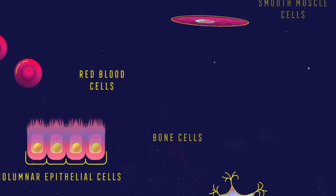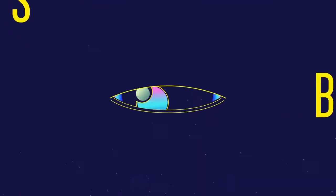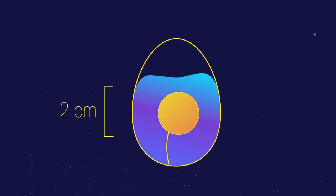Now cells come in all different shapes and sizes. Occasionally, cells can be large enough to be seen by the human eye. For example, the yolk of a chicken egg is actually a single cell.